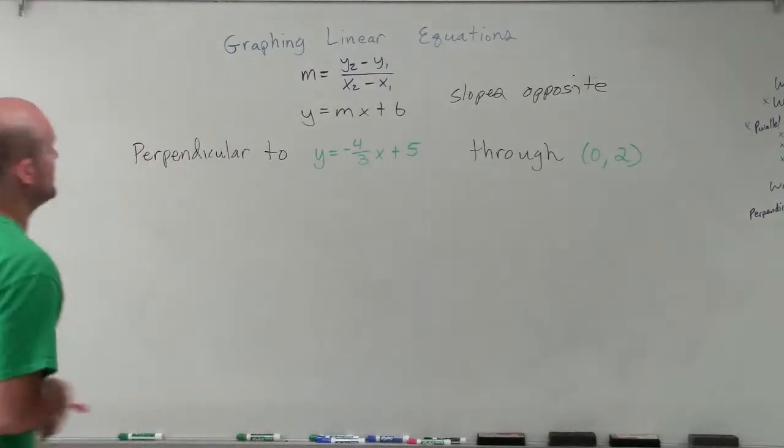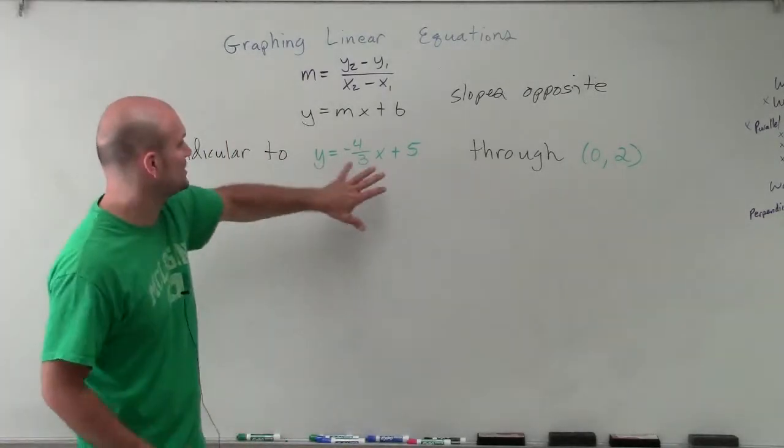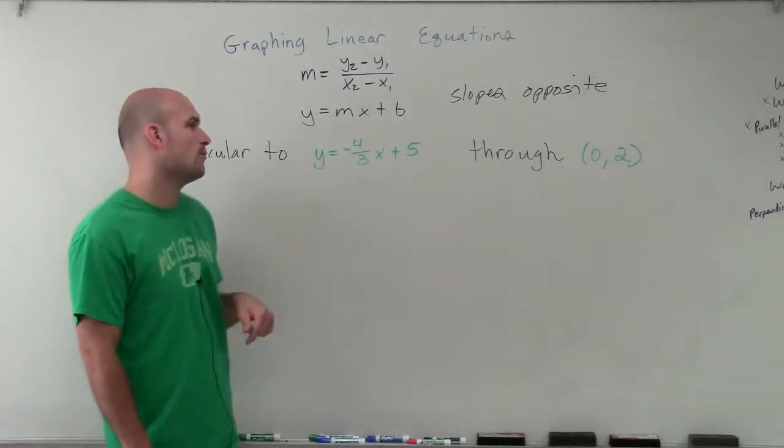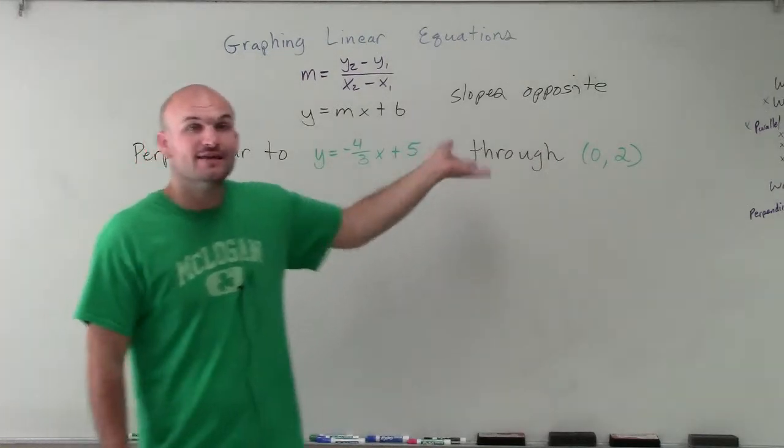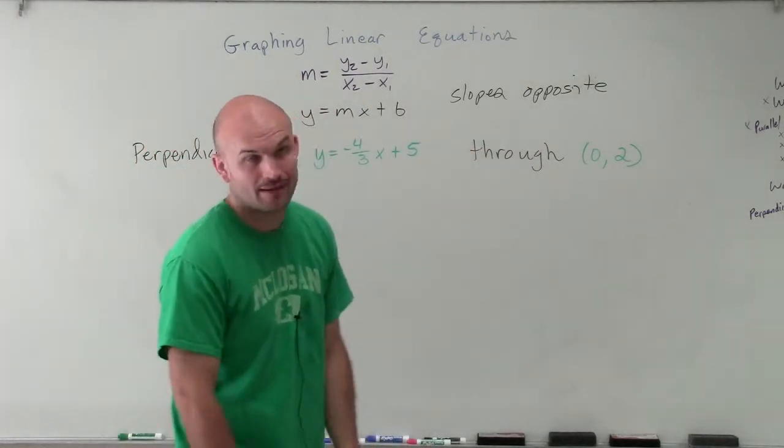Welcome. So what I'd like to do is show you how to find a perpendicular line to the equation y equals negative 4 thirds x plus 5 that goes through the point 0 comma 2.